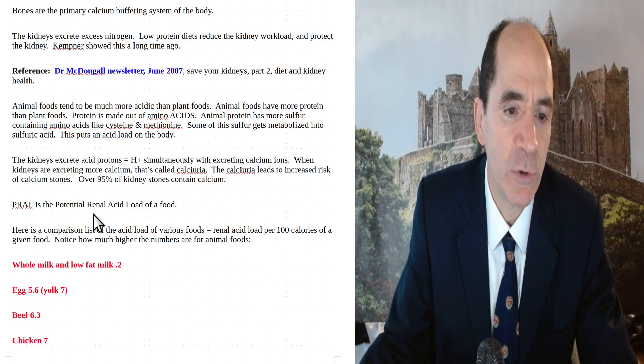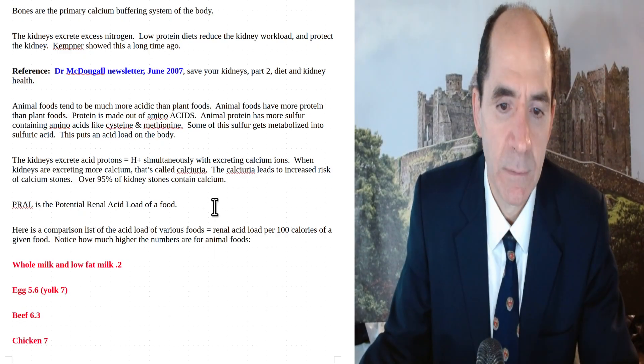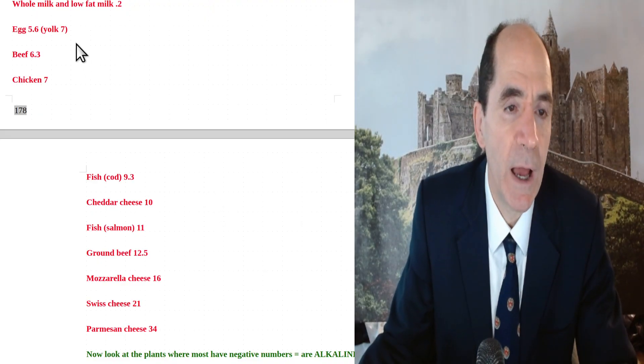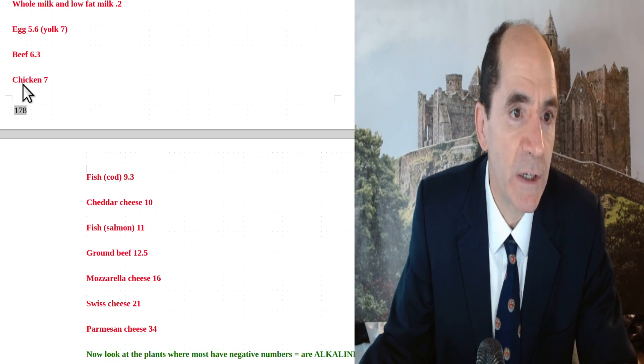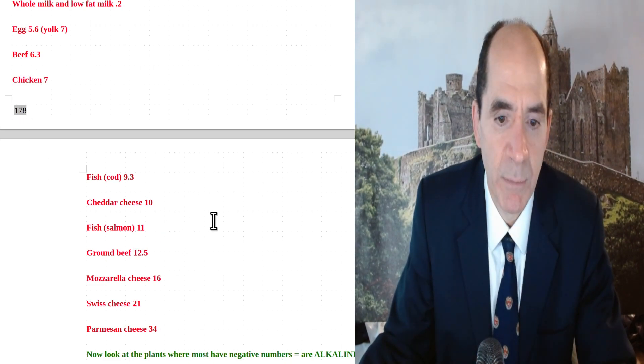PRAL, potential renal acid load, is the acid load of food. Here's a comparison list of the renal acid load per 100 calories of a given food. You can see it's pretty high in all these animal foods. You're looking around 5.6, 6, 10. Now let's take a look at the numbers on some plant foods.